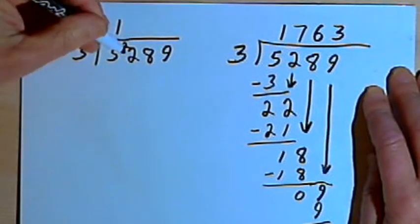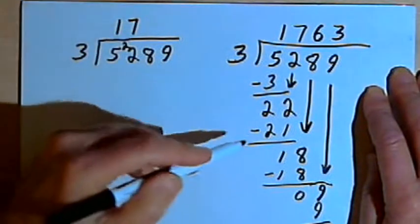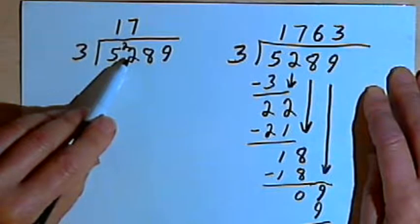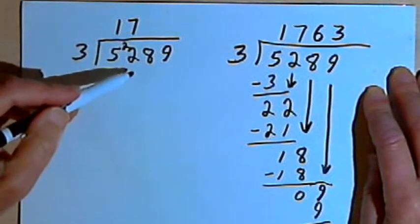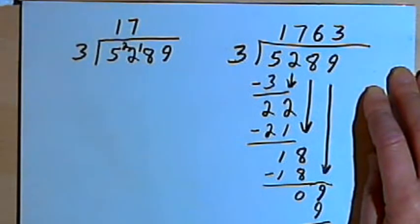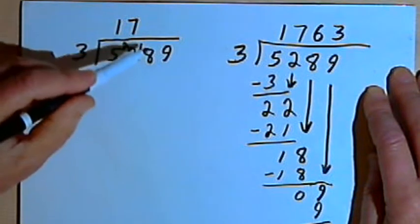So 3 goes into 22 7 times. 7 times 3 is 21. I'm keeping that 21 in my head and subtracting it from 22. 22 minus 21 is 1. So I'll take that 1 and write it in front of the next digit, which is an 8. So that means I've got 18 there.